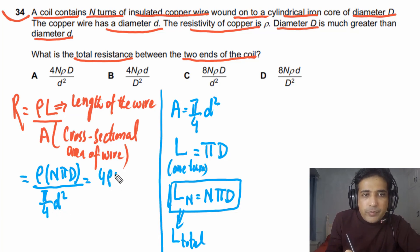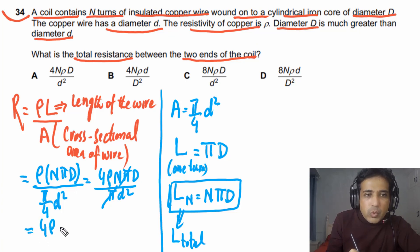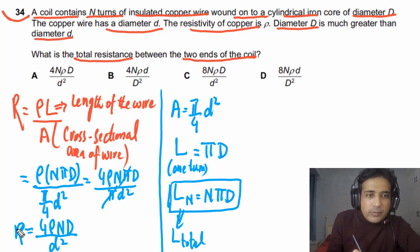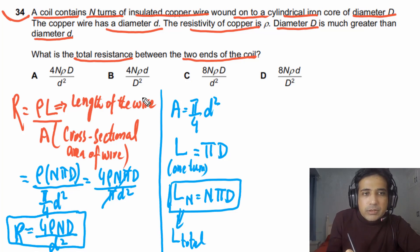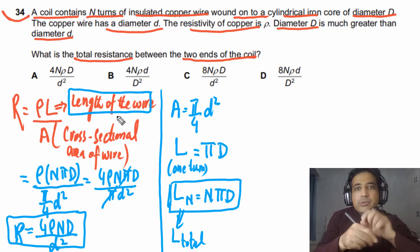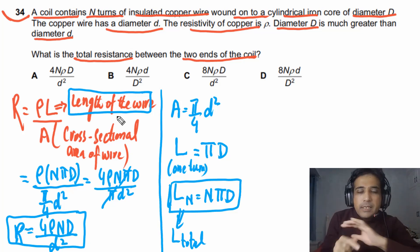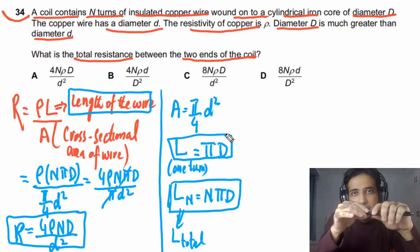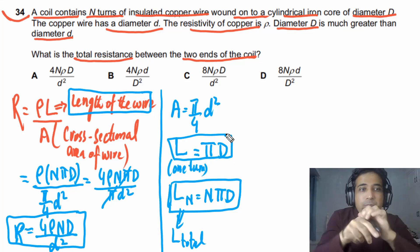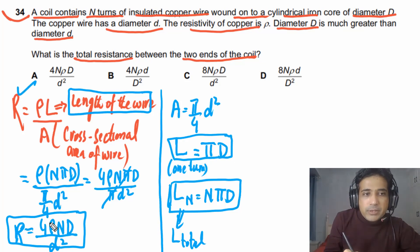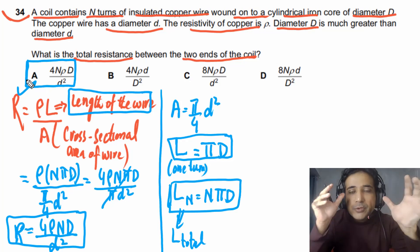Simplifying: R = 4ρN π D divided by π d². The π cancels, giving a final answer of R = 4ρND / d². To solve this type of problem, identify the circumference per turn as π × D, multiply by N turns for total length, then substitute into the resistance formula. The final answer is option A.